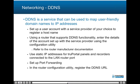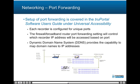DDNS is a service used to map user-friendly domain names to IP addresses. Set up a user account with a service provider to register a hostname. Using a router that supports DDNS functionality, enter the details of the account using the configuration utility — refer to the router manufacturer documentation. Use static IP addresses for TruePortal panels and recorders connected to the LAN router port, then set up port forwarding and register the DDNS URL. Each recorder is configured for unique ports; the firewall or broadband router port forwarding setting will control which recorder IP address will be accessed based on port.